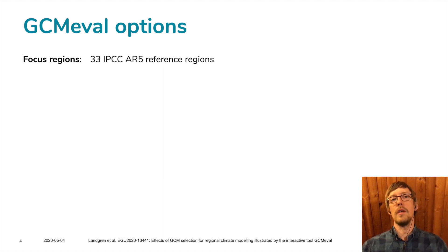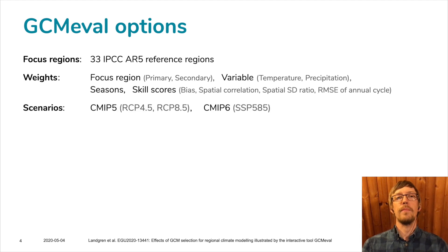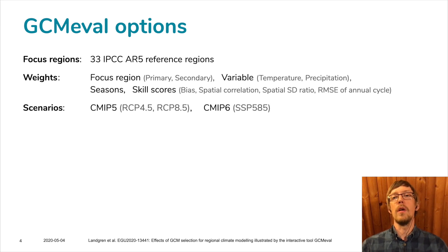You can select a primary and a secondary region. This is the list of user-selectable weights: focus region, variable, season, and different skill scores. There are different scenarios included — for CMIP5 we have RCP 4.5 and 8.5, and for CMIP6 we have SSP 5-8.5. We are also considering adding more scenarios, but this is what we have right now.